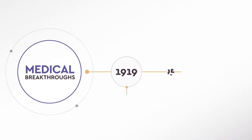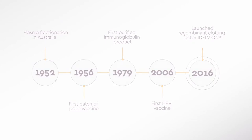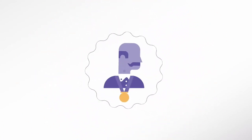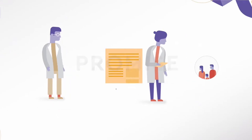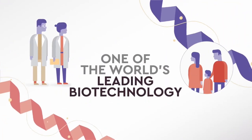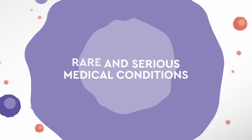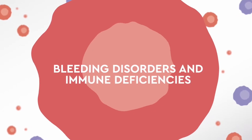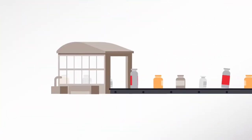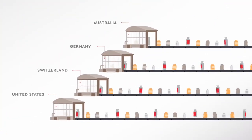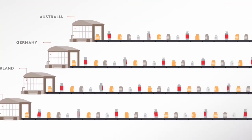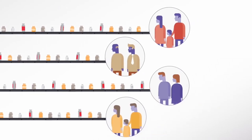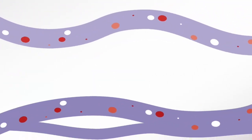CSL is a global biotechnology company that researches, develops, manufactures and markets products to treat and prevent serious human medical conditions. CSL's product areas include blood plasma derivatives, vaccines, antivenom and cell culture reagents used in various medical and genetic research and manufacturing applications. It primarily makes money by manufacturing blood plasma therapies and vaccines around the world.